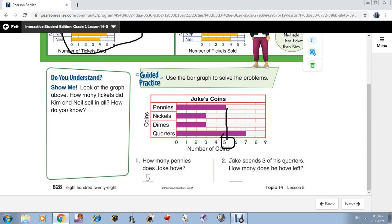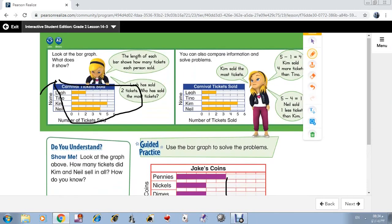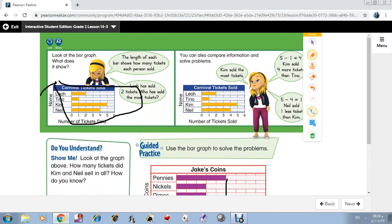Number 2: Jake spends 3 of his quarters. How many does he have left? Quarters, all of them here, 7. So 7 minus 3 equals... 4. So the answer is 4.